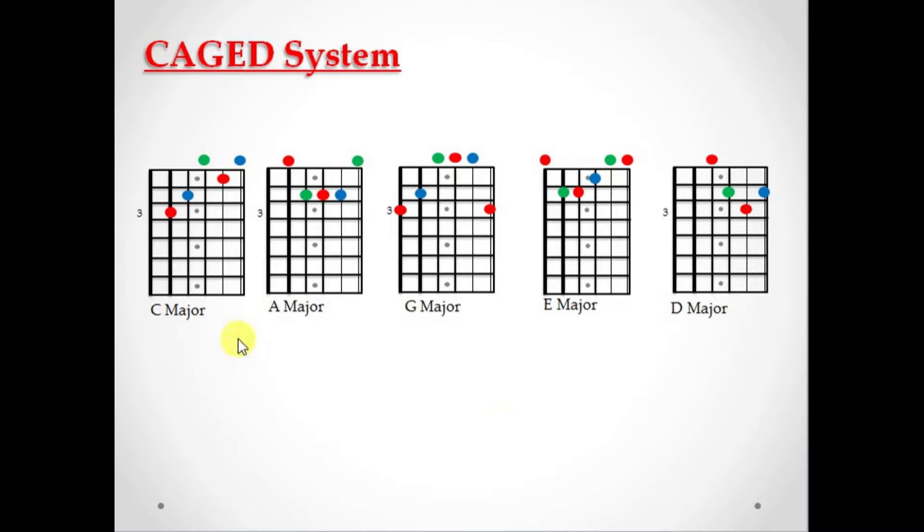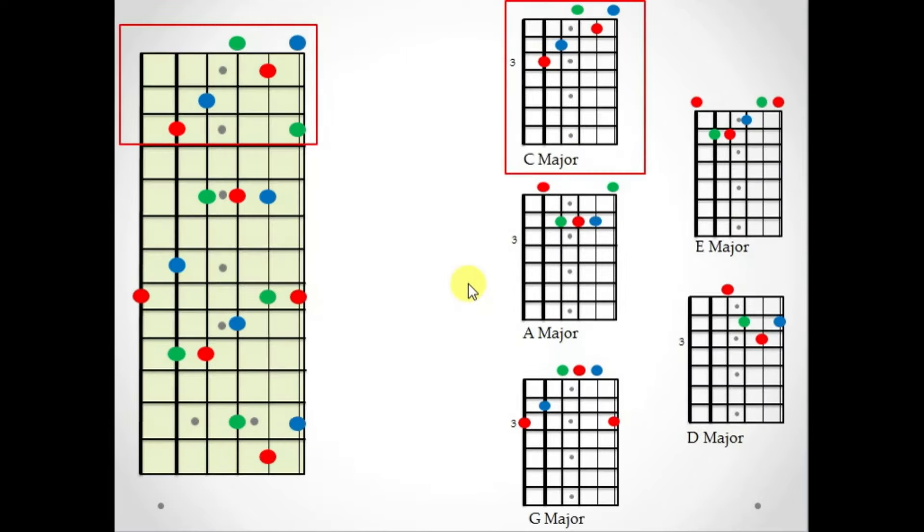So when we think of these as shapes, what that allows us to do is take our C major chord right here, and we're going to play a C major chord in the A shape, in the G shape, the E shape, and the D shape. So let's take a look at this across the entire fretboard now so you can get a better understanding of it.